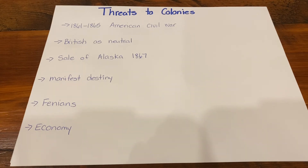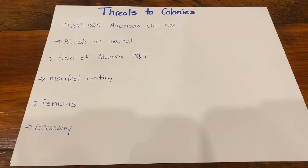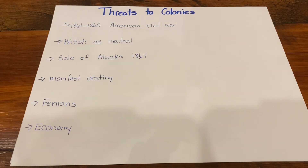Then there were the Fenians. The Fenians were a group called the Irish Republican Brotherhood, and they were upset because of what was happening in Europe between Britain and Ireland and the British rule over the Irish. We have this idea that conflicts happening in Europe are spilling over into the British colonies in Canada. With the Fenians came the idea within the American army that the British colonies in Canada were not well protected and could be taken over. Because of the high Irish population in Ontario, there was a fear that this sentiment of taking over the British colonies would spread into Canada.